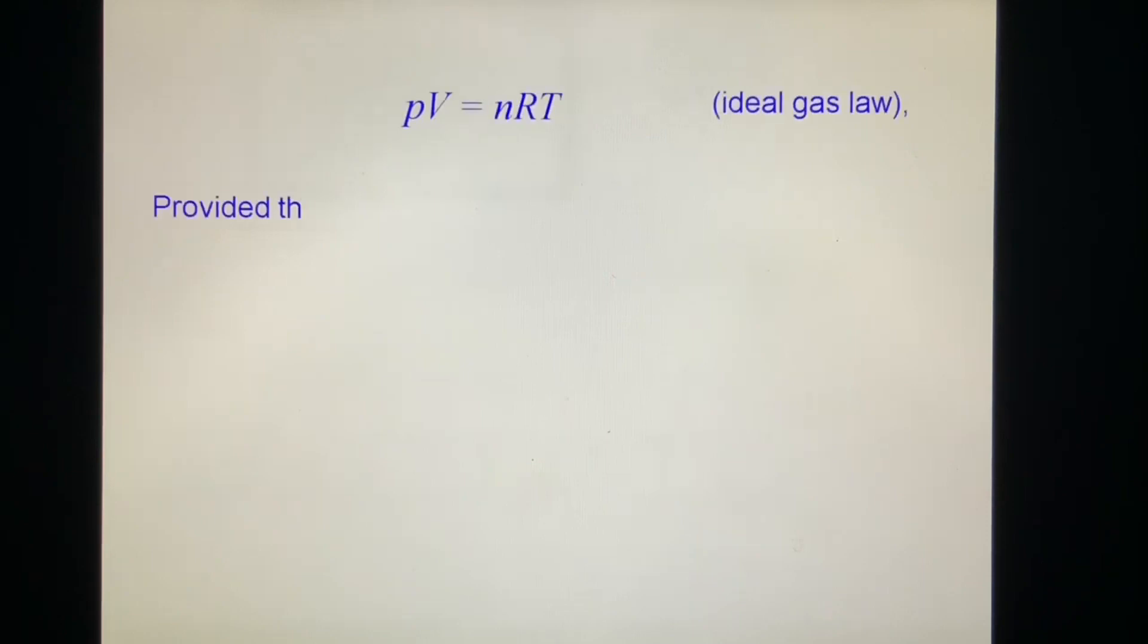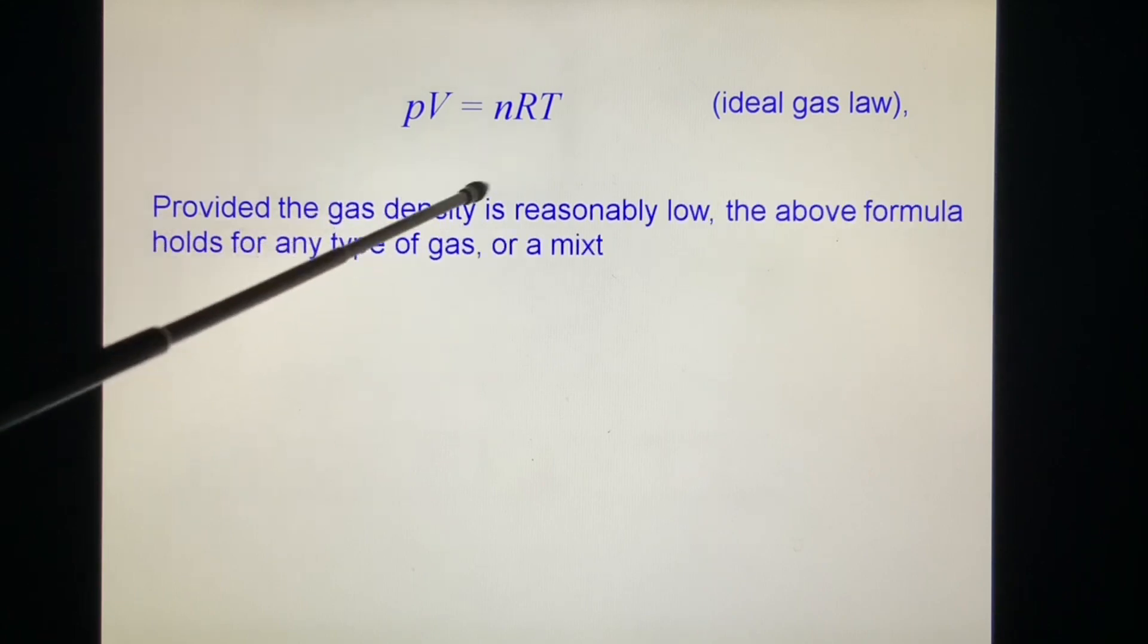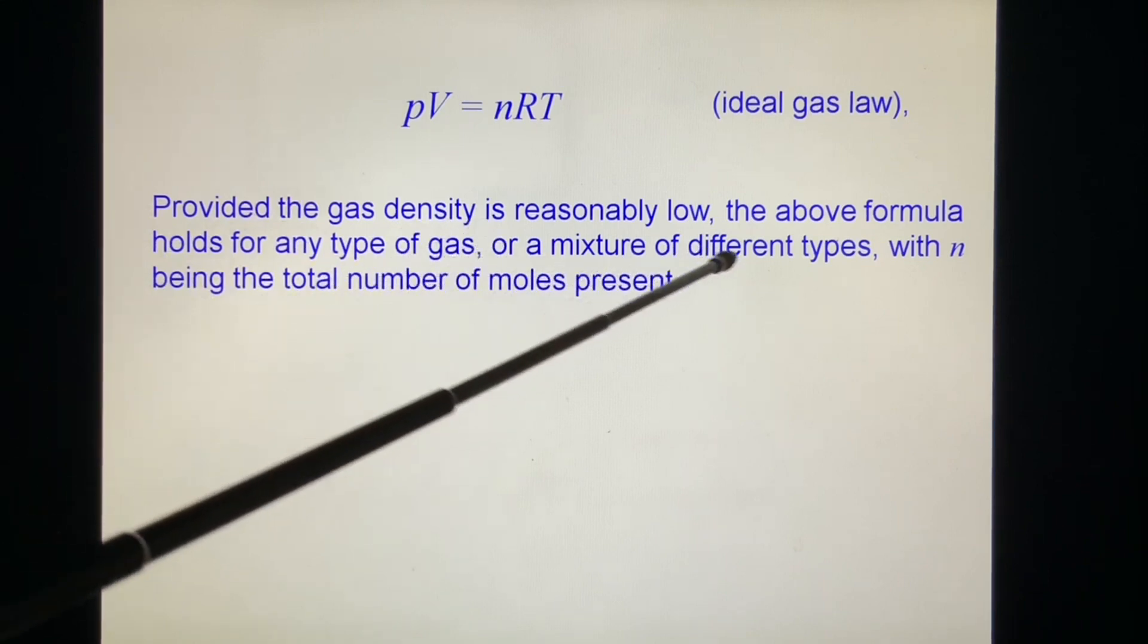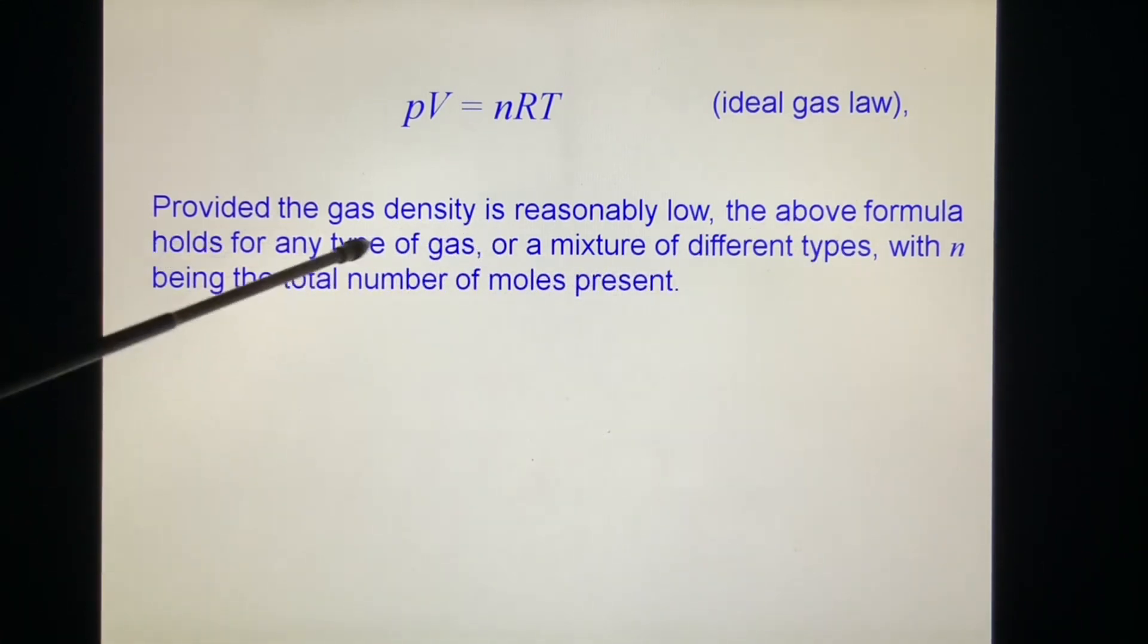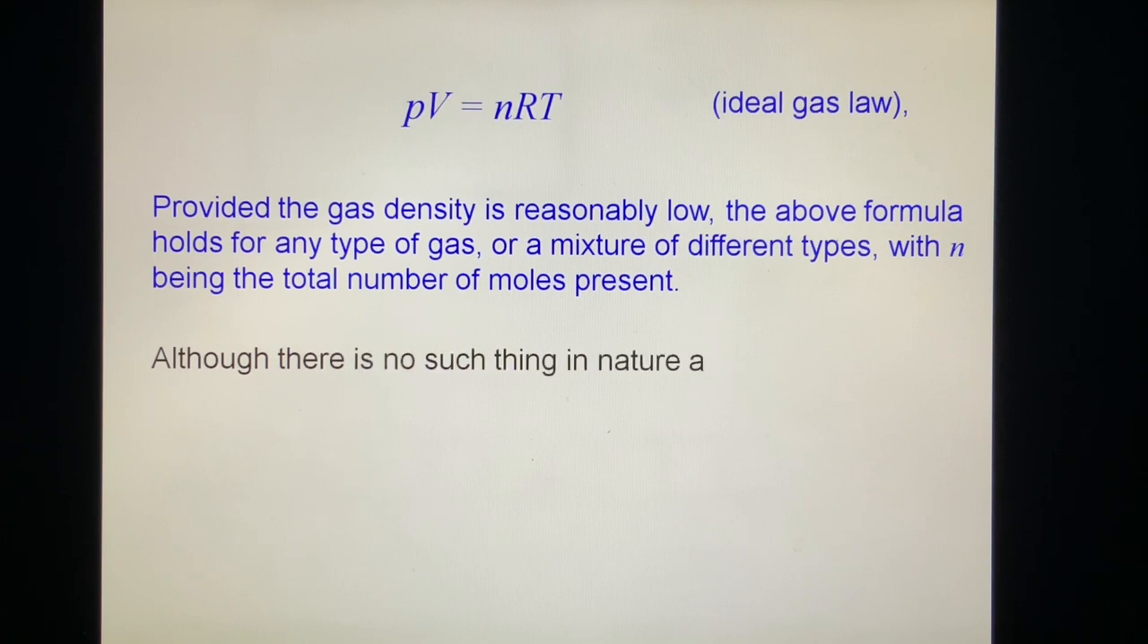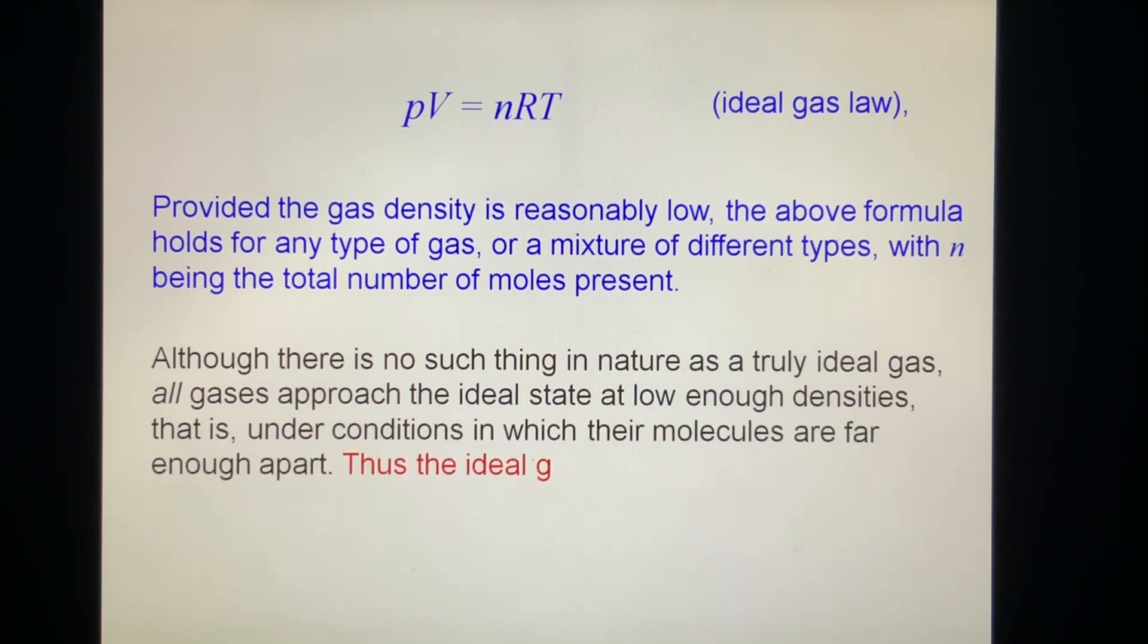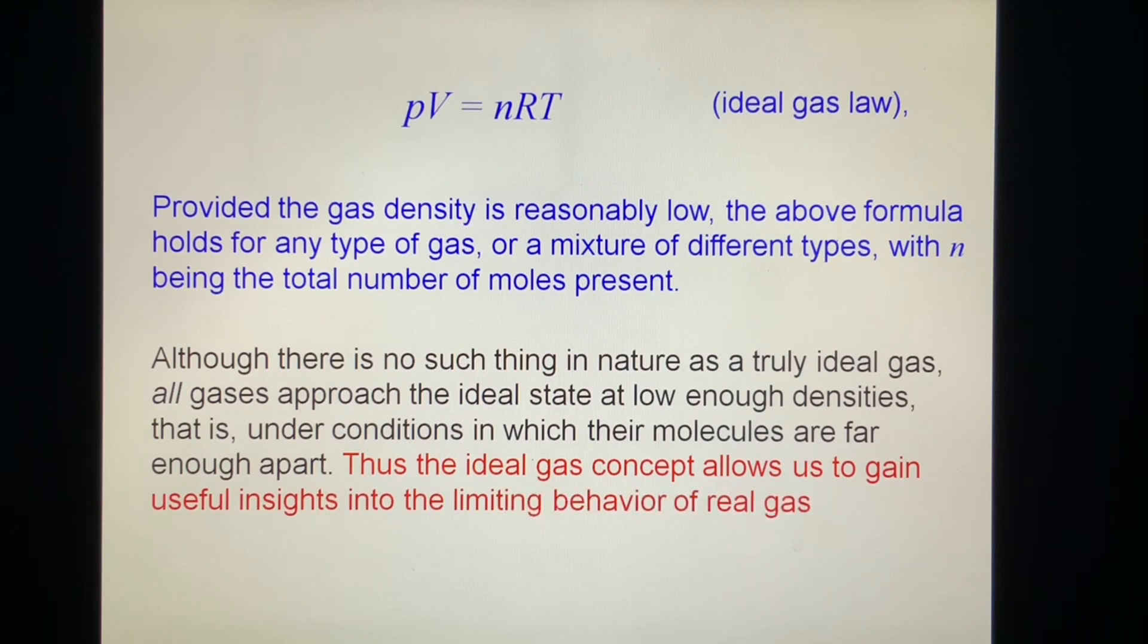PV equals nRT. This is the ideal gas law. Provided the gas density is reasonably low, the above formula holds for all types of gas, or a mixture of different types, with n being the total number of the moles present. Although there is no such thing in nature as a truly ideal gas, all gases approach the ideal state at low enough densities, that is, under conditions in which their molecules are far enough apart. Thus, the ideal gas concept allows us to gain useful insights into the limiting behavior of real gases.